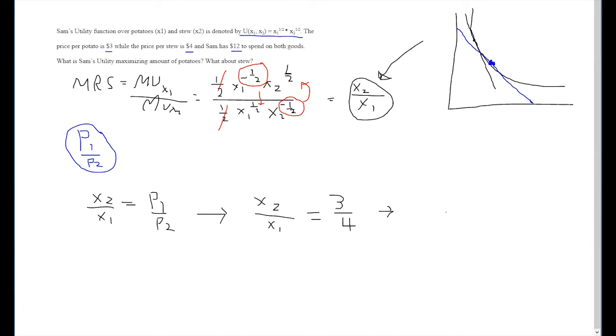To isolate one of our variables, we can multiply both sides by x1 and get that x2 is equal to 3 fourths times x1.